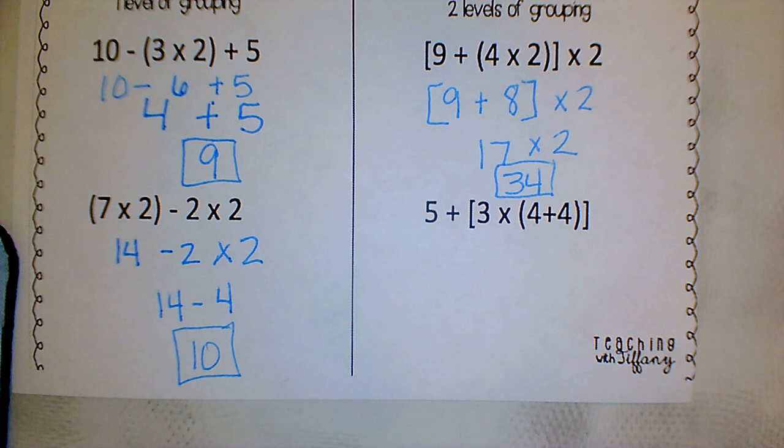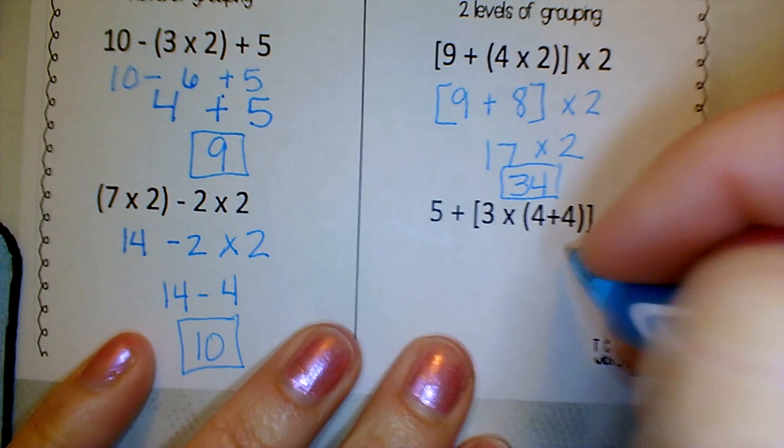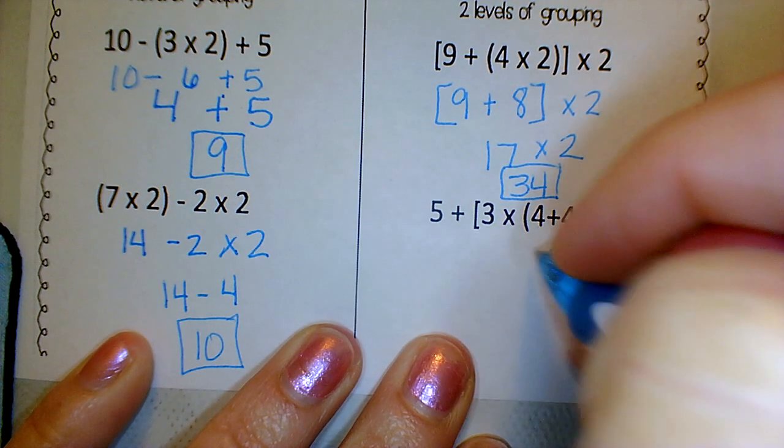So let's look at this next one. They throw in a little bit of a challenge for us. We have five plus bracket, three times parentheses, four plus four, end parentheses, and an end bracket. What are we going to do first? The parentheses, right? Because we can't do anything with that three times whatever in the bracket until we get the four plus four. So what is four plus four, class? Eight.